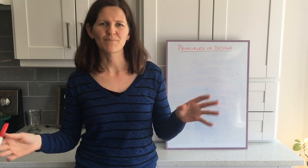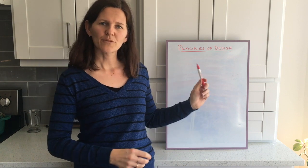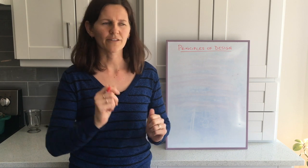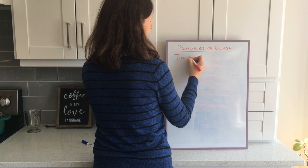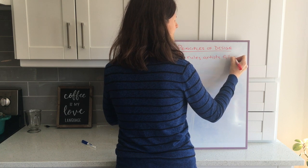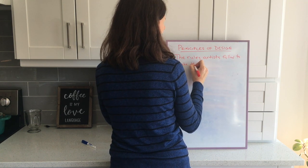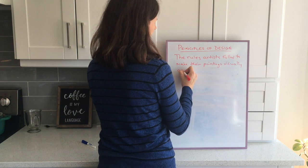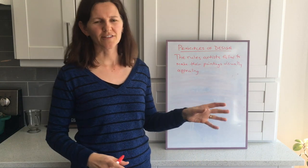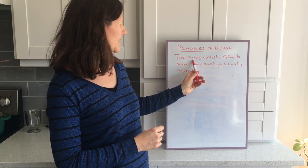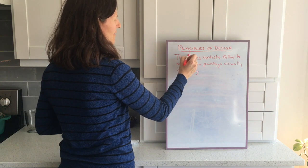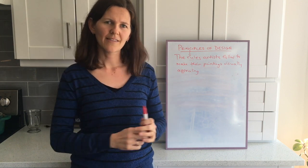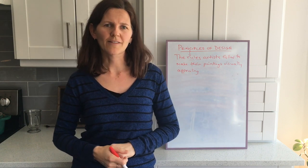Likewise, if you threw a bunch of flour and sugar and pepper and salt together, you're not necessarily going to get a cake that tastes good. That's where the principles of design come in - the principles are like the recipe. They're also known as the rules that artists follow in order to make their paintings visually appealing - just a fancy way of saying make them look good. A helpful memory trick: principals in a school make rules, so principles in art make rules too.